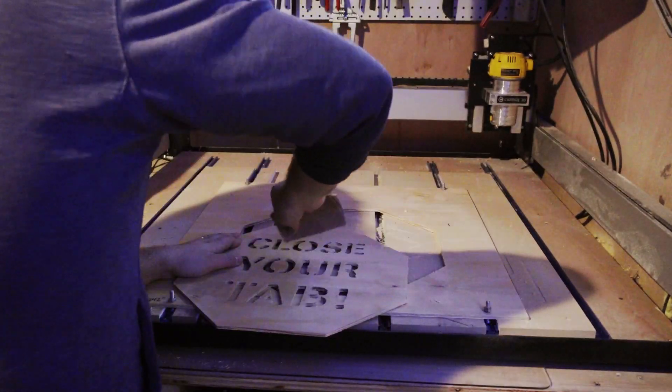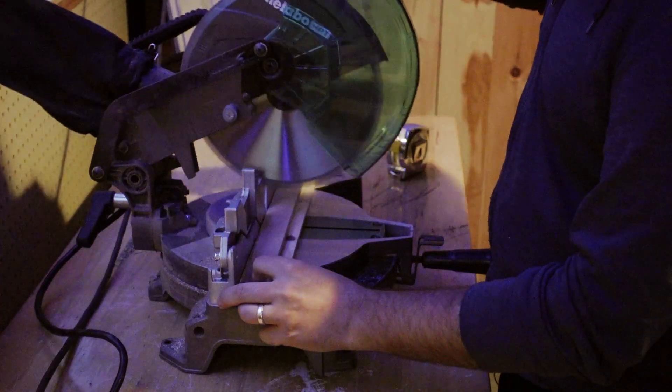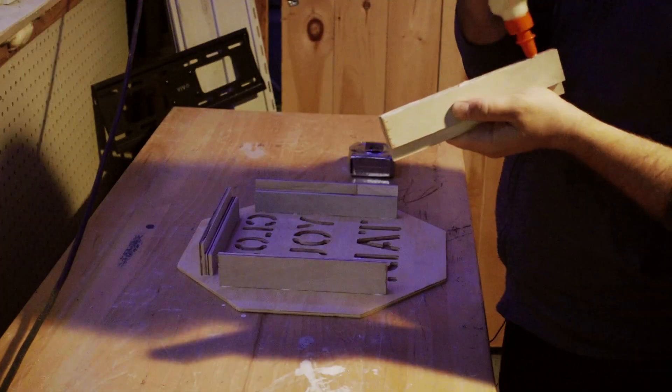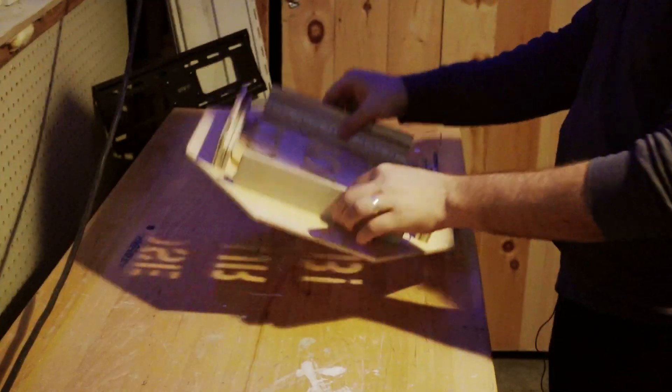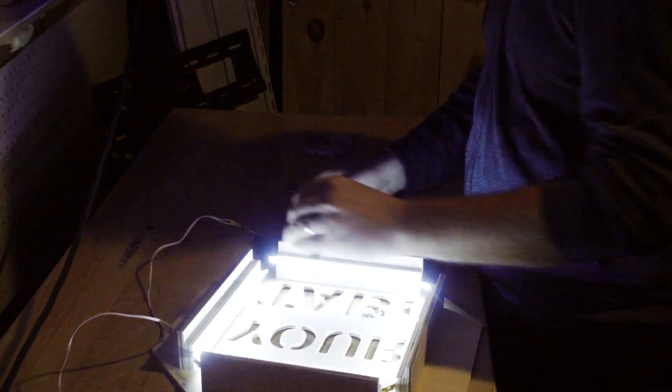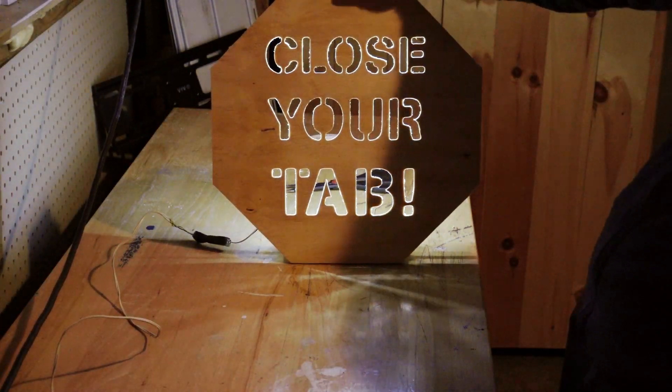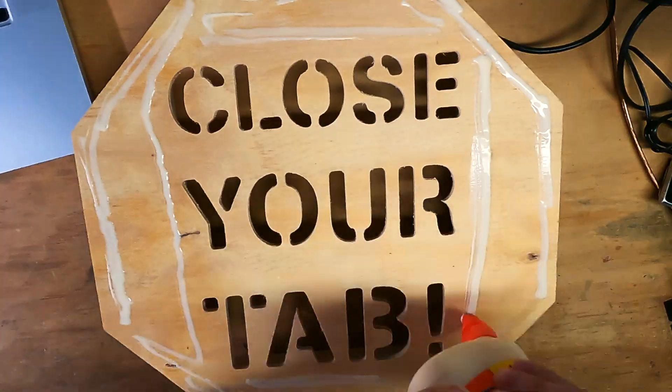Once the CNC machine finished, I sanded the sign down, cut out some wood strips and glued them to the back. My plan is to attach LED strips to the back of the sign. So the wood strips are there as a place to affix them. It also creates some distance between the door and the sign so the lights can illuminate.